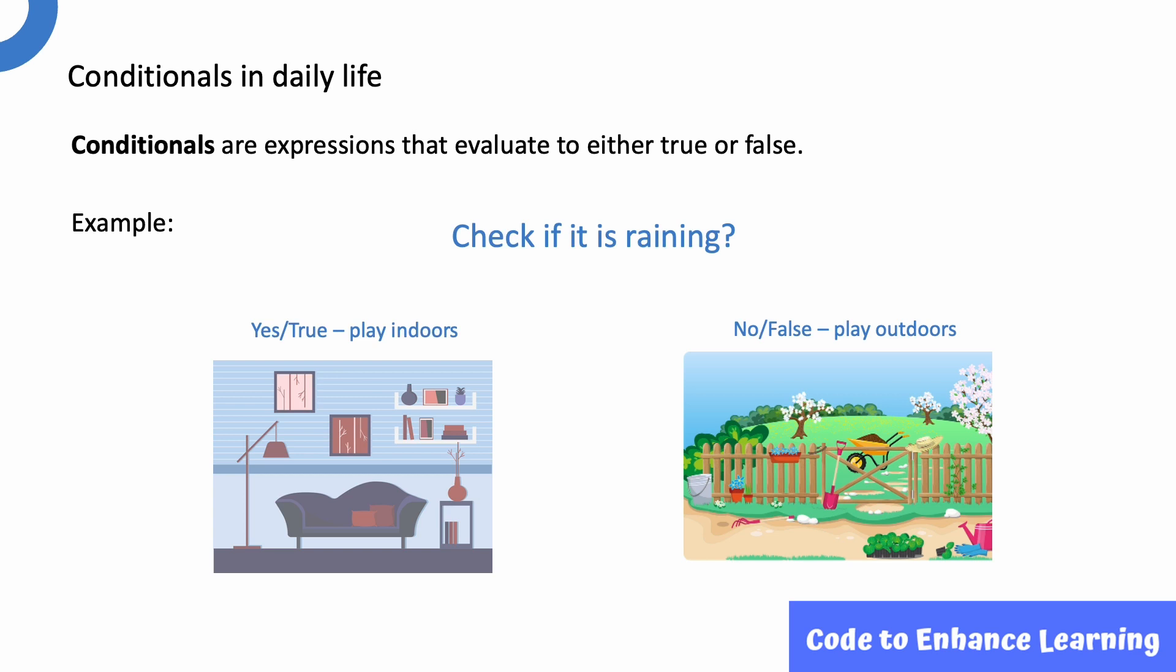Conditionals are expressions that evaluate to either true or false. In our daily lives, we come across conditions regularly. We all play with our friends daily, right? In the rainy season, we will check to see if it is raining before we go out to play. If it is raining, we will play indoors. If it is not raining, we will play outdoors. This is a perfect example of using conditions in real life.